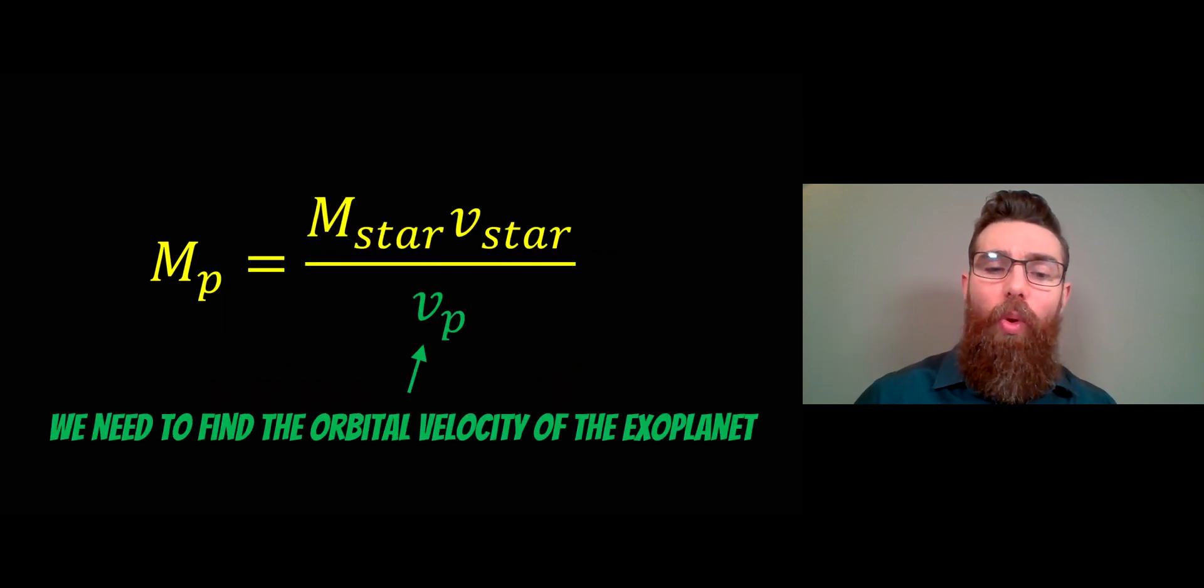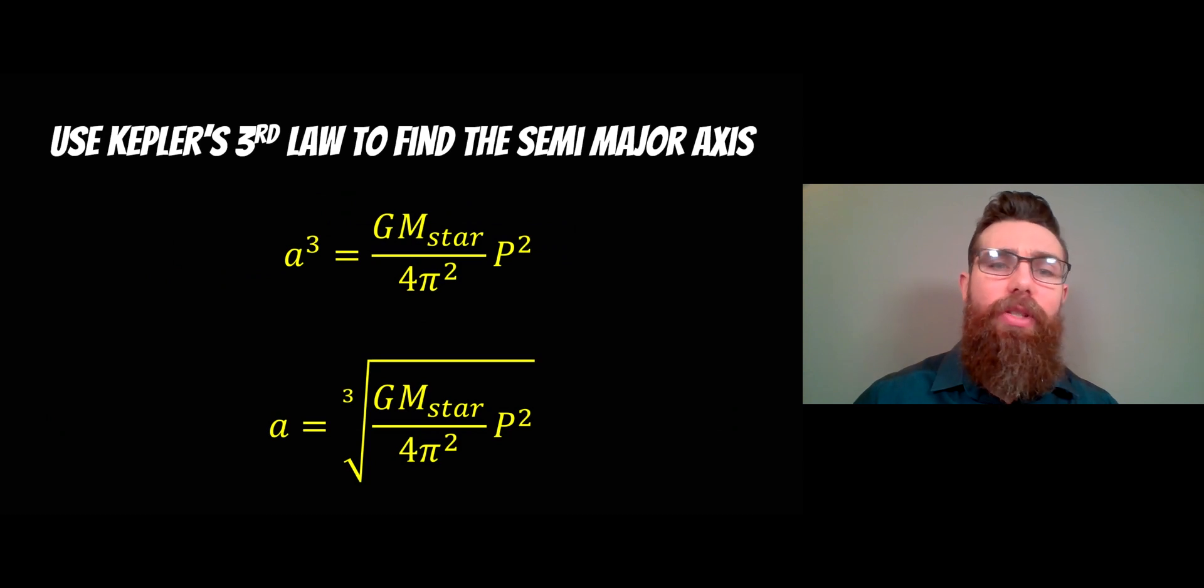Here we've got one last thing we need to actually find in order to get our exoplanet's mass. First we need to find the orbital radius or the semi-major axis for the exoplanet. So what we can do is use Kepler's third law to find this. We could have done this with the transit method as well actually.